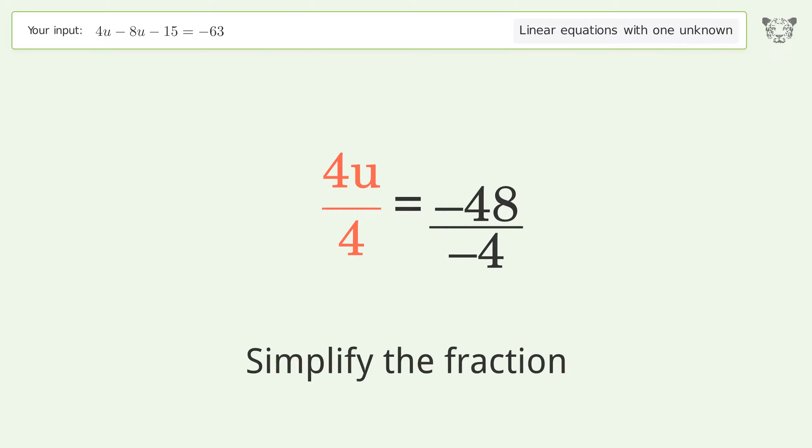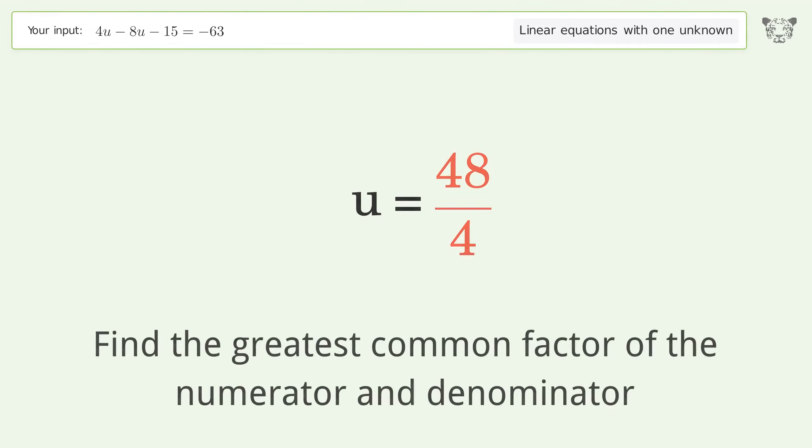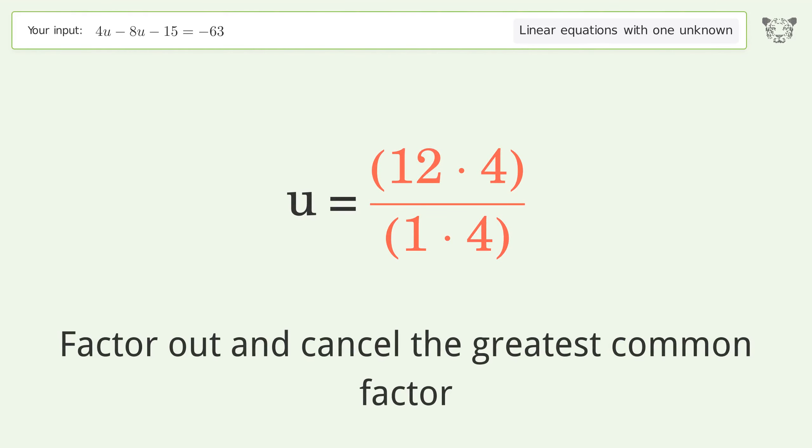Simplify the fraction by canceling out the negatives. Find the greatest common factor of the numerator and denominator, then factor out and cancel the GCF.